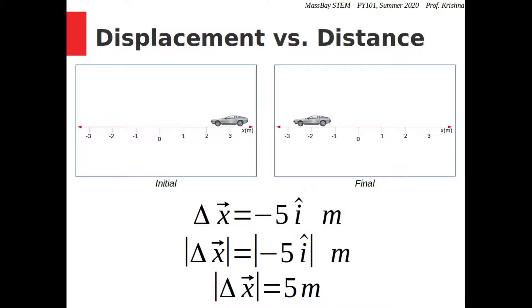Suppose we ignore the direction of displacement and focus only on its size. That means we lose the î-hat and also the negative sign, since that indicated direction. We have now created a scalar version of displacement, called distance. Unlike displacement, distance has no direction and is always positive.